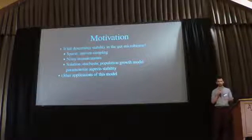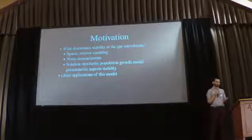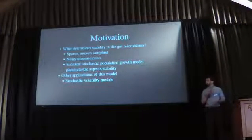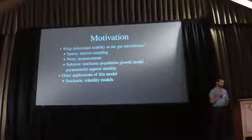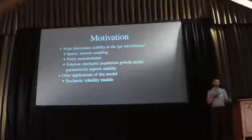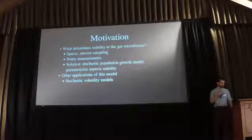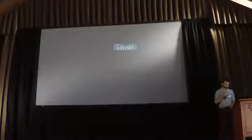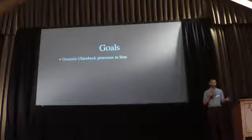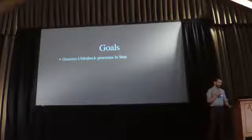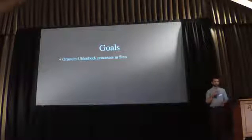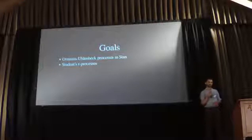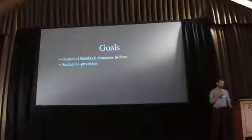This is the stochastic Gompertz model, but it's more commonly known in other fields as the Ornstein-Uhlenbeck model. Most of the research I've seen on this is in the finance literature — it's similar to the stochastic volatility and GARCH models. It also comes up in physics, epidemiology, and evolution of traits in phylogenetics. The goals for this talk are to show how Ornstein-Uhlenbeck processes can be fit in Stan and to go beyond the simple Gaussian OU process into a Student-T process.